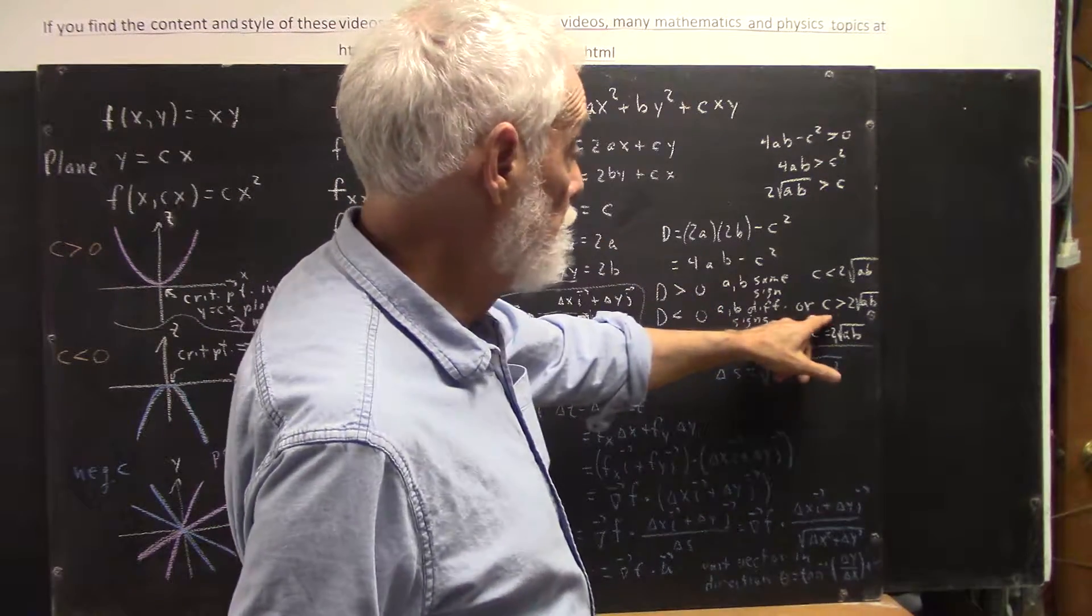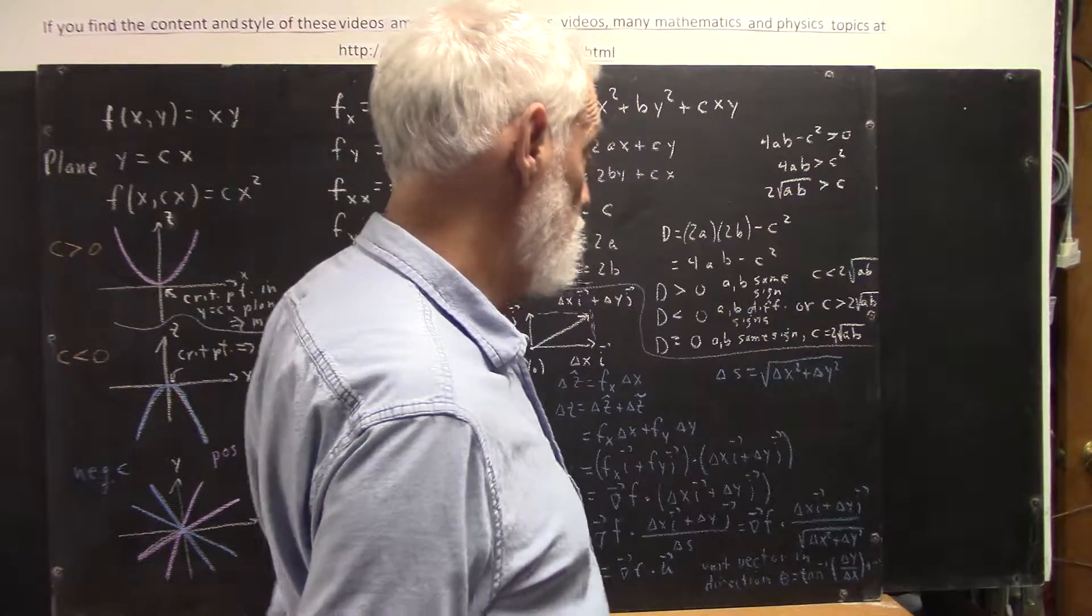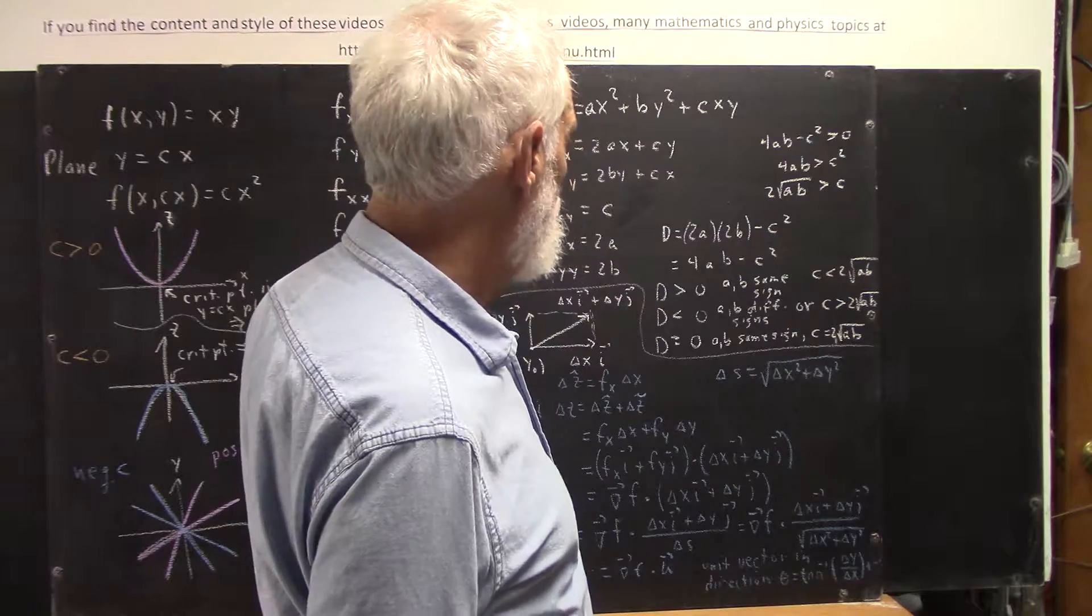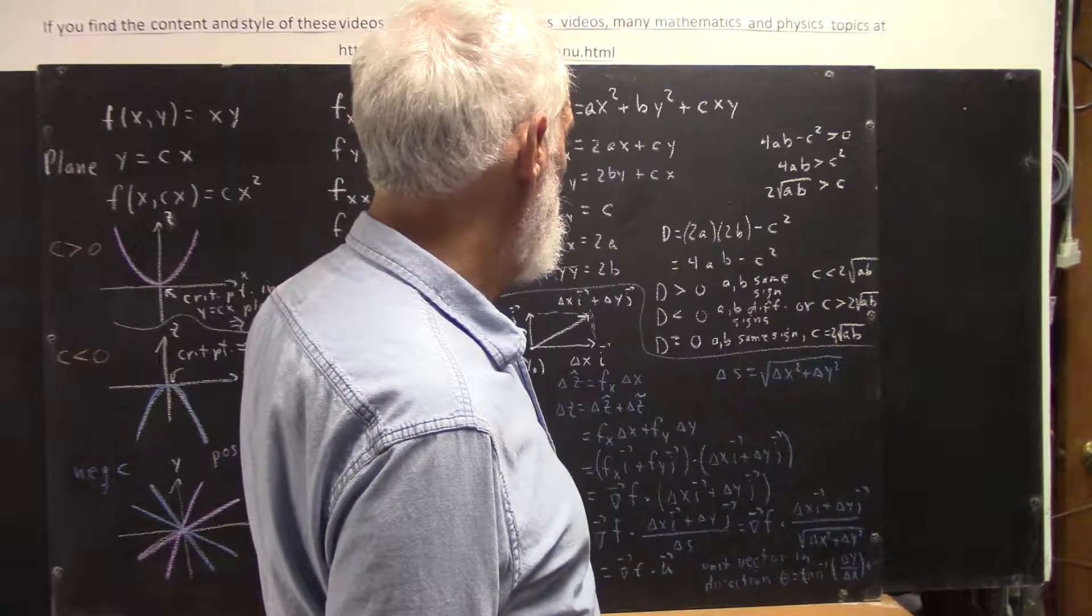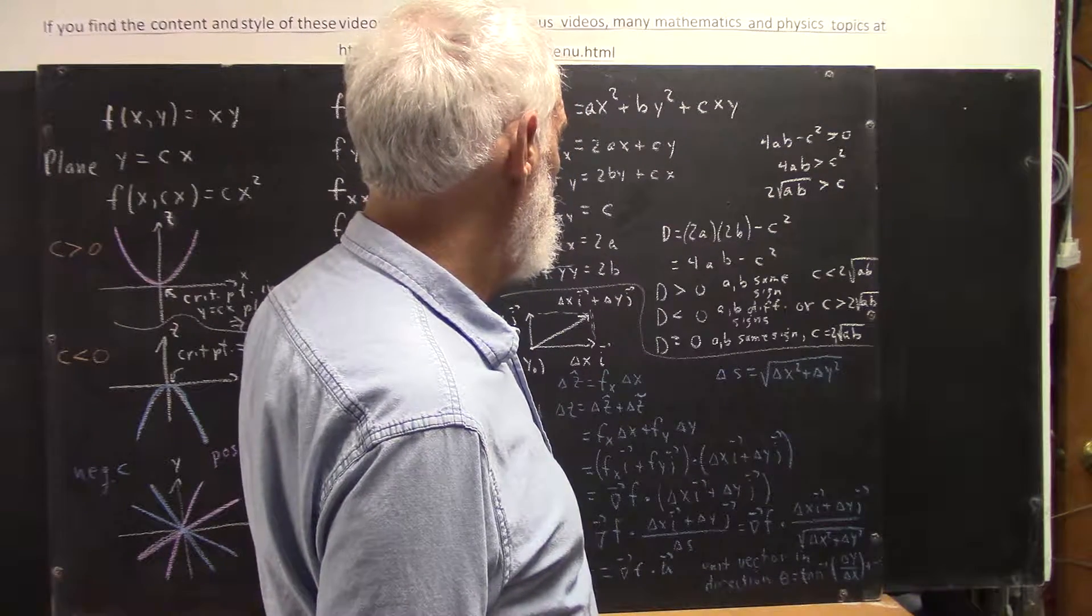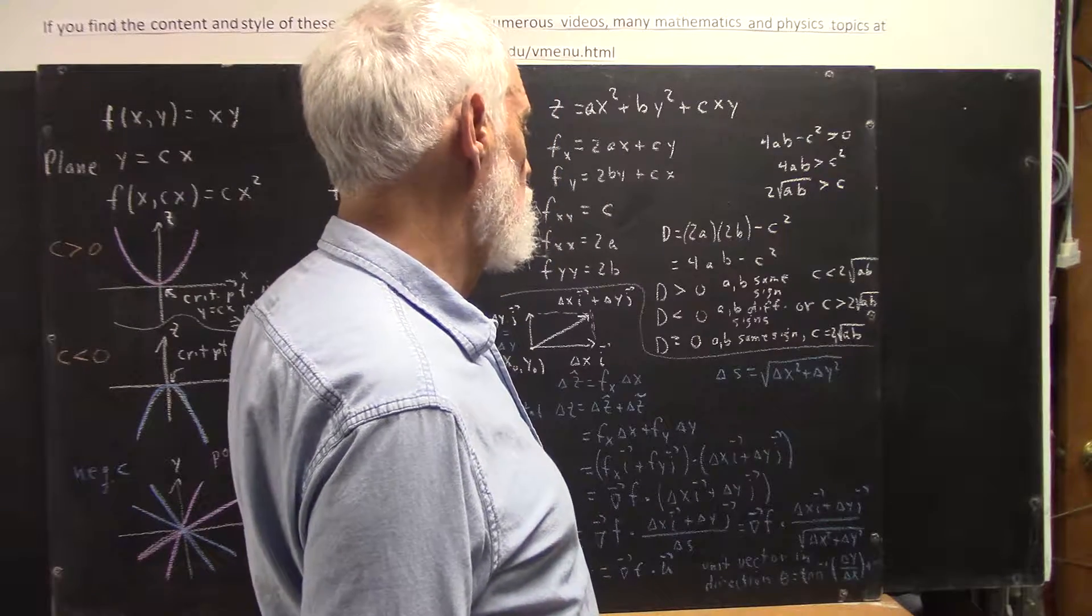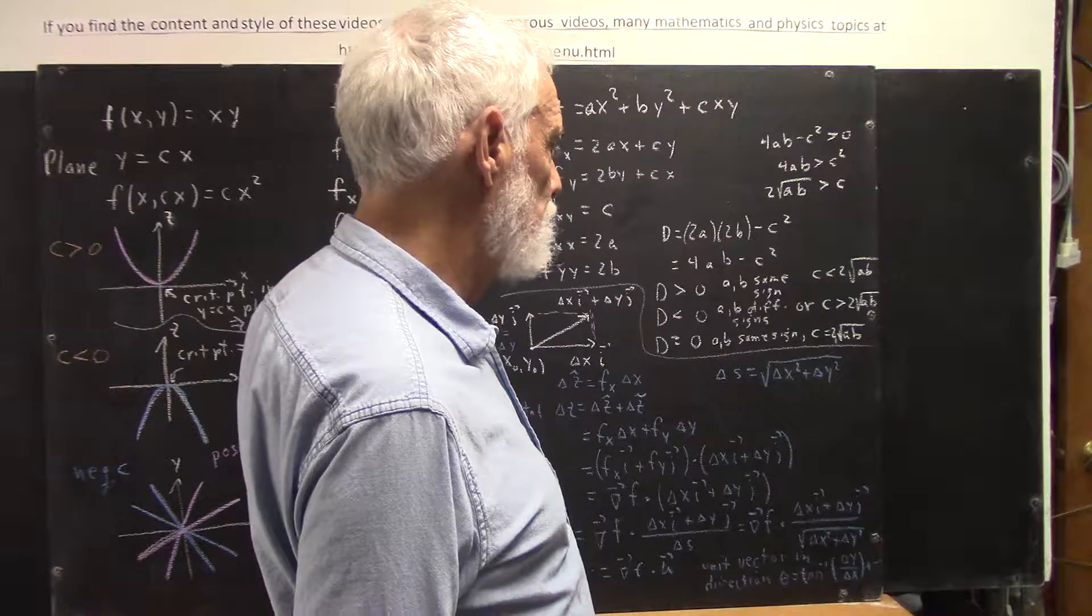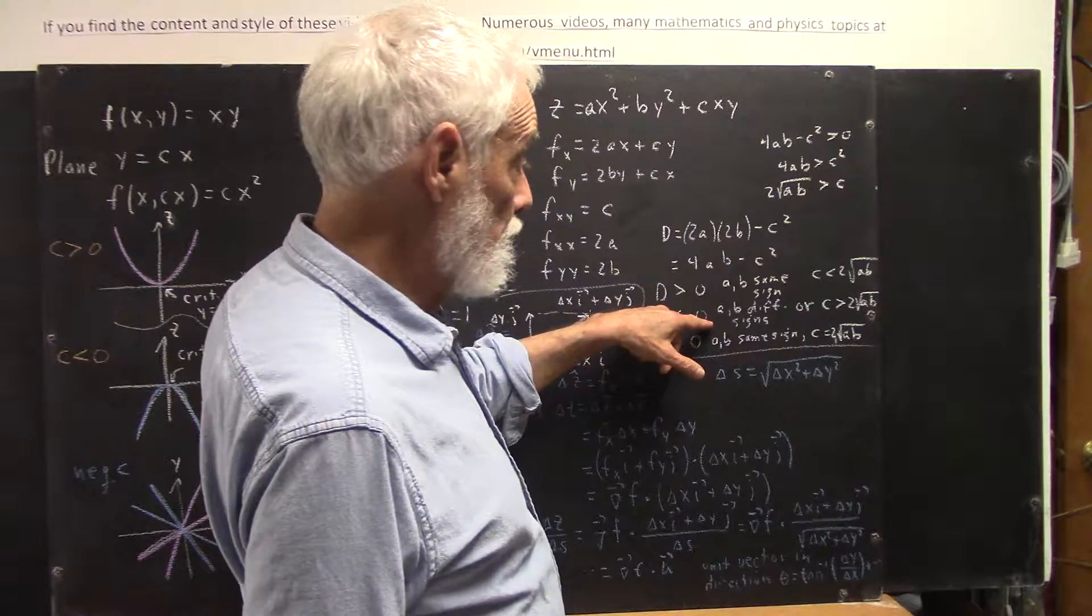Now you get d less than 0 if c is bigger than 2 square root of ab. And I say that would occur if a and b have different signs.